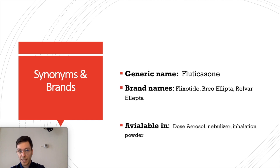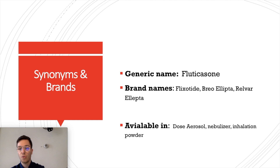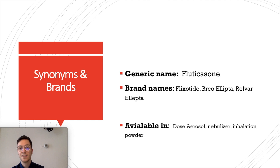The generic name of this medication is fluticasone, but it is known under several brand names like Flixotide, Brieoleptol, or Relvoleptol, and is available in three forms: dose aerosols, nebulizer, or as an inhalation powder, each with their own indications of use.